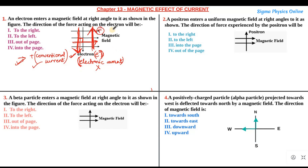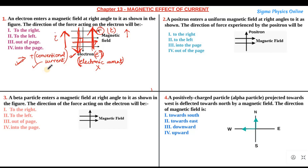Since the positively charged particles are moving upwards, the current direction in this case will be considered as flowing in the upward direction. The middle finger, which represents the current direction, will be pointing upward and not downward. We will not point our finger in the direction in which the electron moves, but rather in the direction in which positive charges will be moving — which is opposite to the electrons. So the direction of current will be upwards.